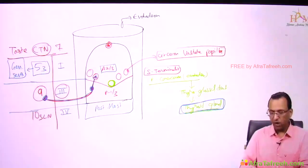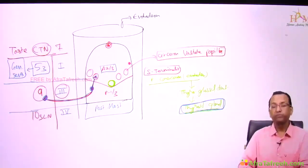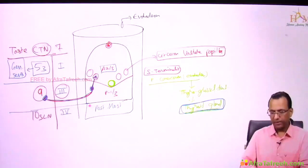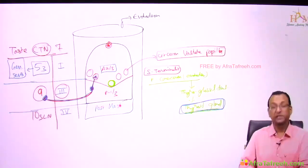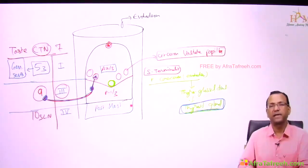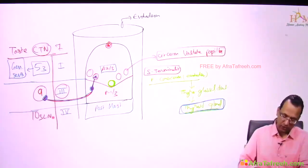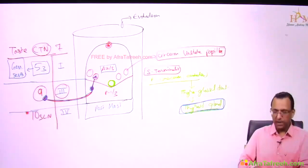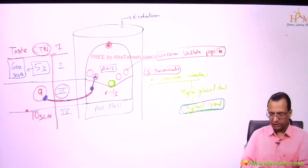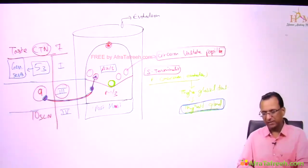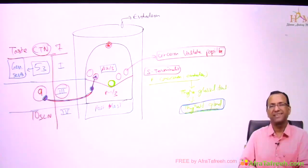If the coffee has reached the posterior most tongue and epiglottis, the taste as well as burning sensation is carried by the branch of the vagus which is the superior laryngeal nerve. The superior laryngeal nerve carries both general sensation and taste sensation of the posterior most tongue and epiglottis.